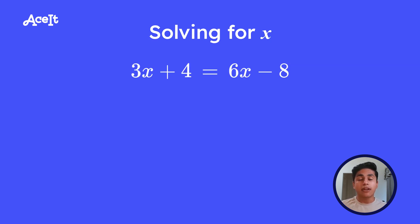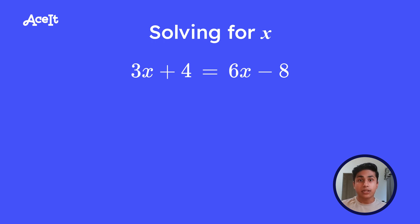The first thing we should do when we have constants and coefficients on both sides is combine our like terms — the constants with constants and coefficients with coefficients. So let's start with the constants and move the 8 to the left side. To do that, we add 8 on both sides and are left with 3x plus 12 is equal to 6x.